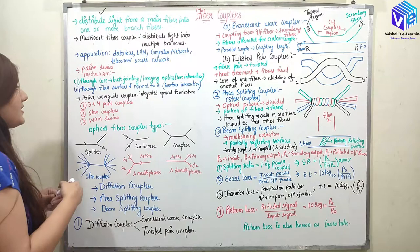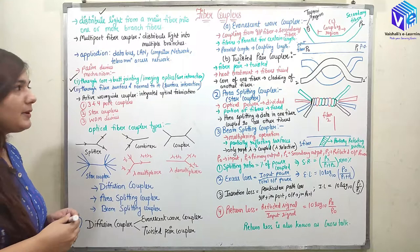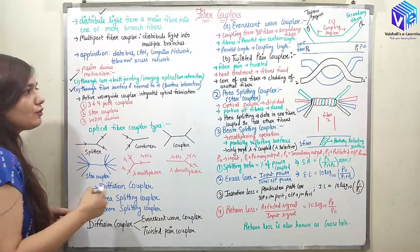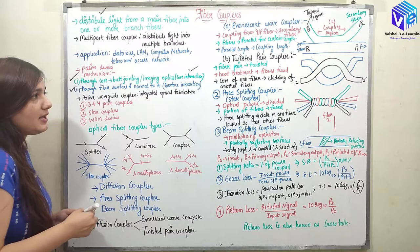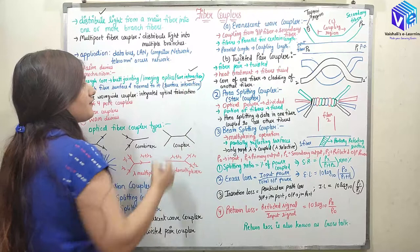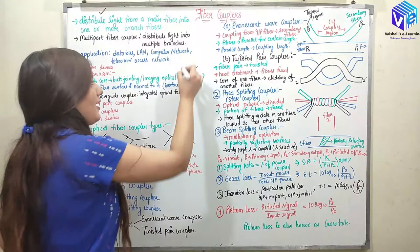We can have passive devices or active devices. The passive devices have two mechanisms: coupling through the core, and coupling through the fiber surface. The first — coupling through the core — is called core interaction coupling, and if coupling is done through the surface, it is called surface interaction coupling.